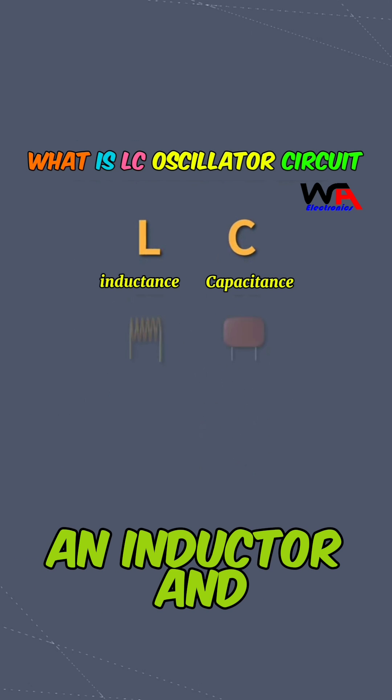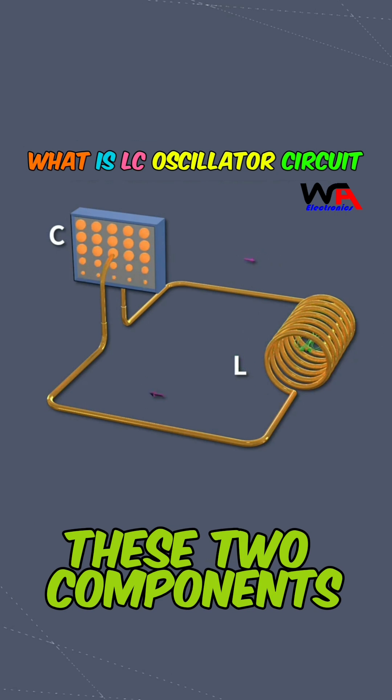An LC circuit, which consists of an inductor and a capacitor, can oscillate if these two components are present.